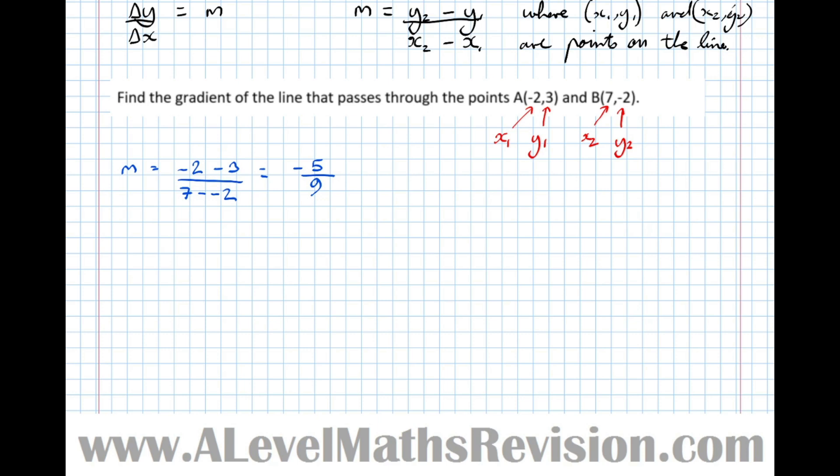Let's see what happens if we swap the points x1, y1 and x2, y2 round. Let's say this one is x1 and y1, and this one is x2 and y2. So m equals y2 minus y1, now it's 3 minus minus 2, over x2 minus x1, minus 2 minus 7, which gives us 5 over minus 9, which again is minus 5 ninths. So no matter which point you decide to be point 1 and point 2, you'll always end up with the same answer.